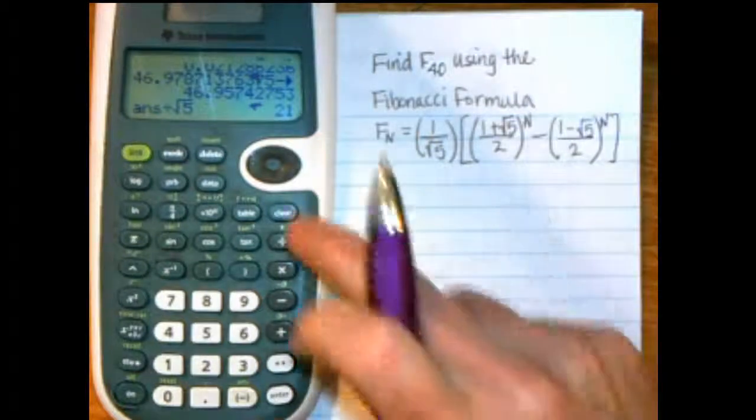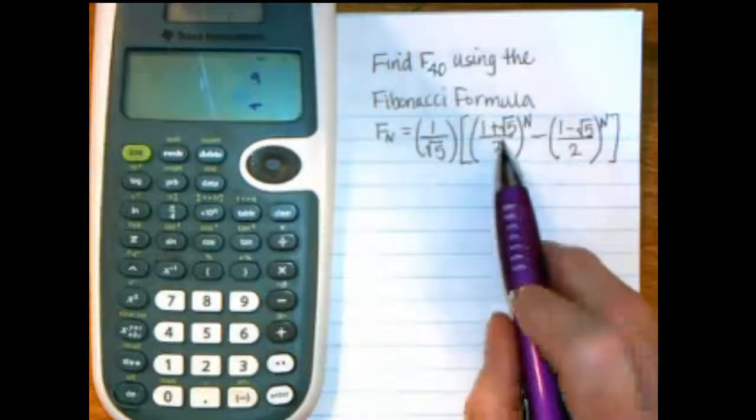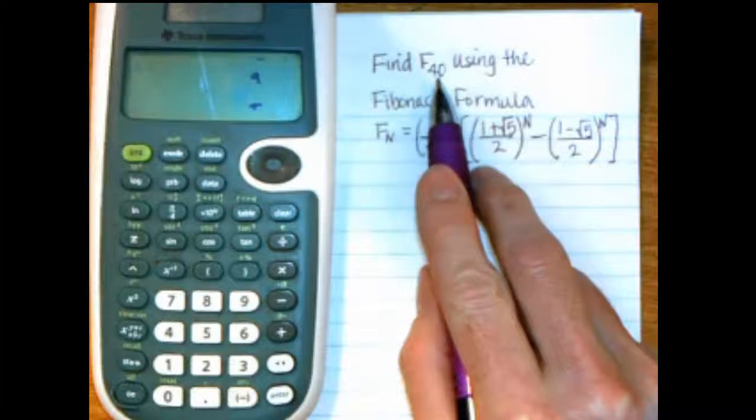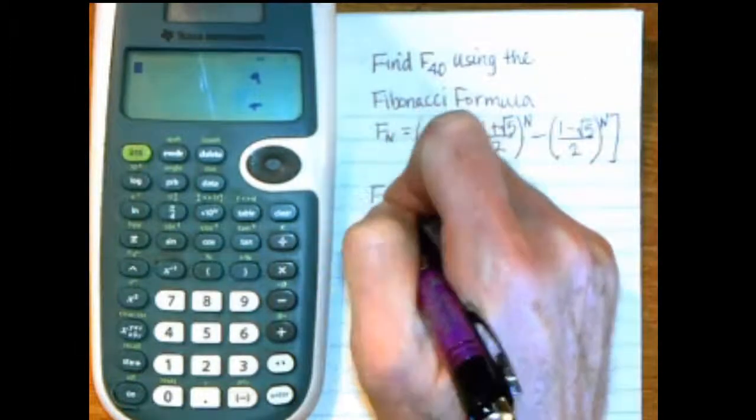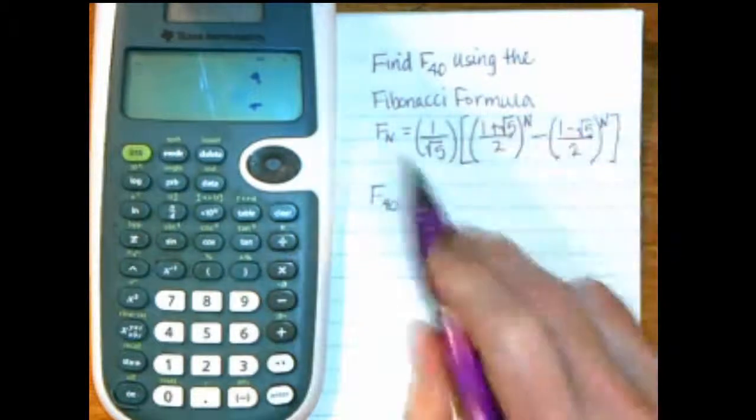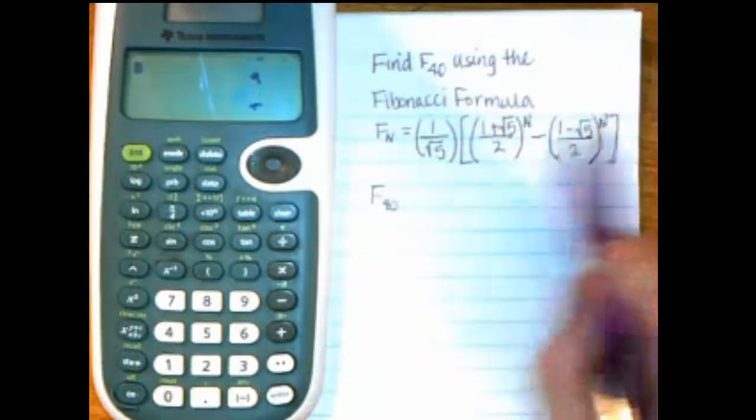So now I'm going to clear, because I want to start over on a new problem. Find F sub 40 using the Fibonacci formula. So I have the formula here, so I'm going to put F sub 40. So my capital N becomes a 40 here and here as well.